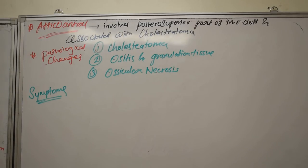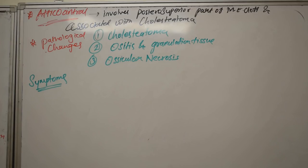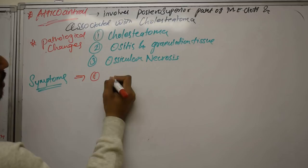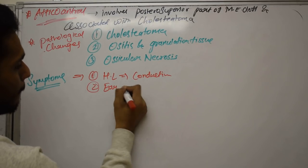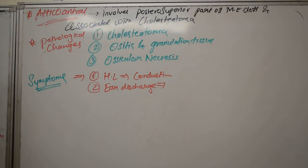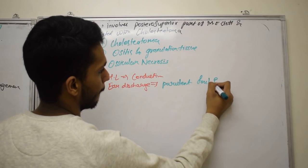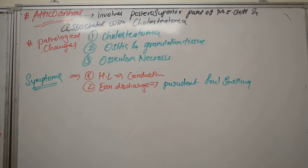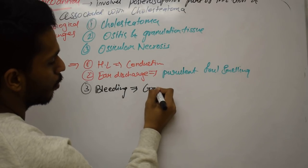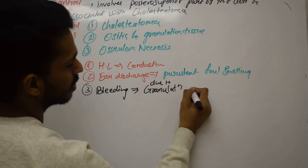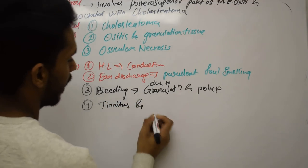Regarding clinical symptoms of atticoantral type — similar to tubotympanic type, we will see ear discharge, which is scanty, purulent, and foul smelling. We will see hearing loss of the conductive type. What is new here is bleeding, which is due to granulation and polyps. Sometimes we may also see tinnitus and facial nerve palsy.